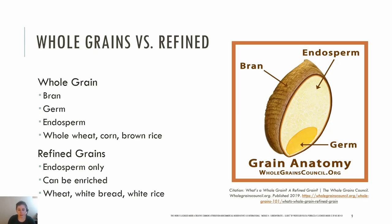Let's review whole grains versus refined. Before harvesting, all grains are whole, meaning they contain the entire seed or kernel of the plant. There are three edible parts: the bran, germ, and the endosperm. There is also an inedible husk that protects the seed. Examples of whole grains include whole wheat, corn including popcorn, brown rice, oats, and rye.